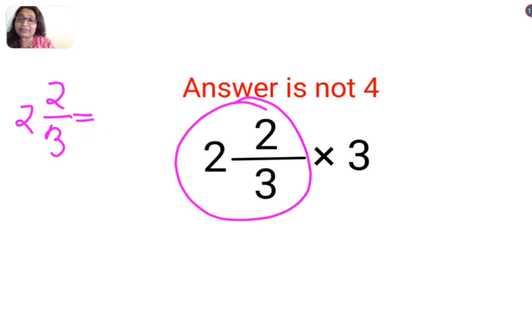This needs to be converted in its improper form and how am I supposed to do that? Improper form continues to have the same denominator but in your numerator what happens is the denominator gets multiplied to the integer part and whatever is the product gets added to the numerator which is 2 again in this case.